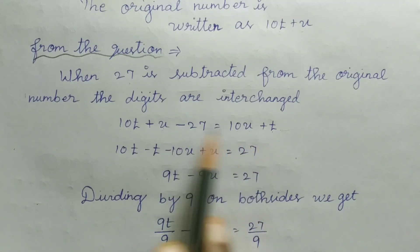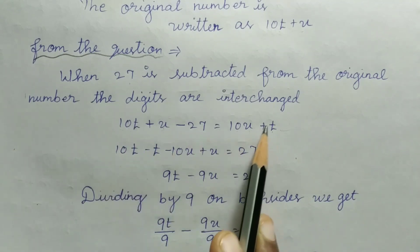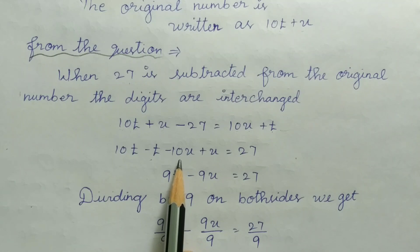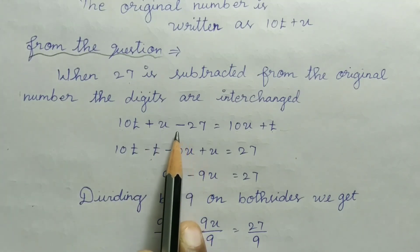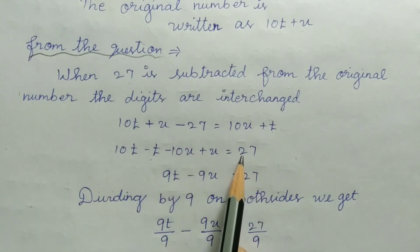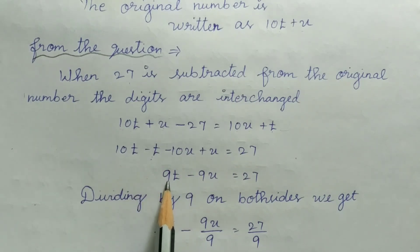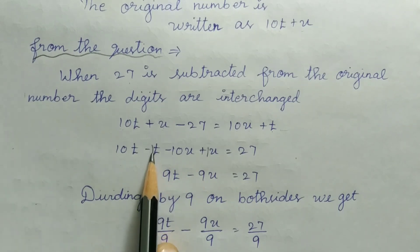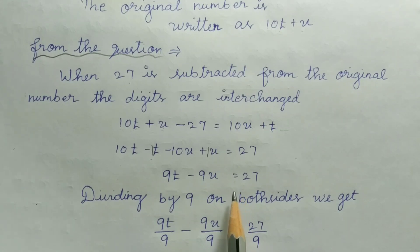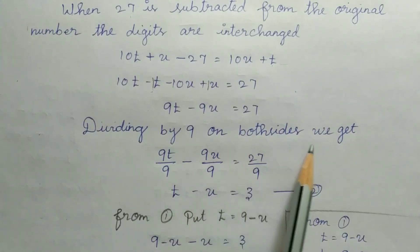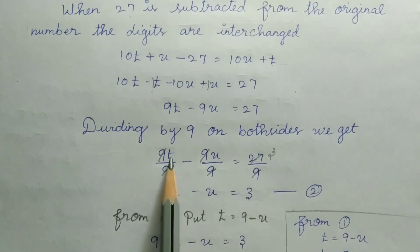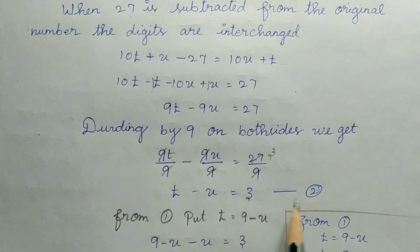Variable already: 10t plus u equals the original number, and 10u plus t equals the interchanged number. Minus 27 equal to the other side, so 10t plus u minus 10u minus t minus 27 equals 10u plus t. Simplifying: 9t minus 9u equals 27. Dividing both sides by 9: t minus u equals 3. This is equation number 2.